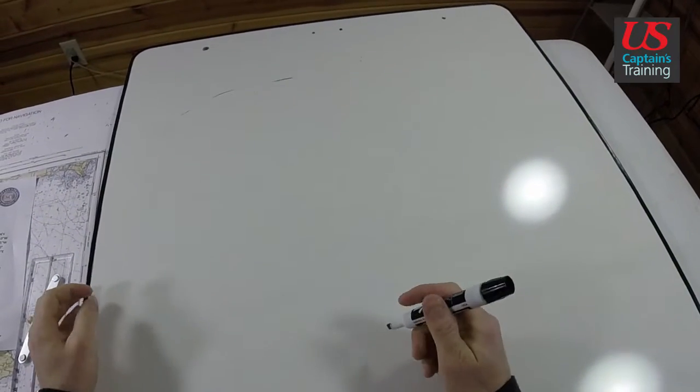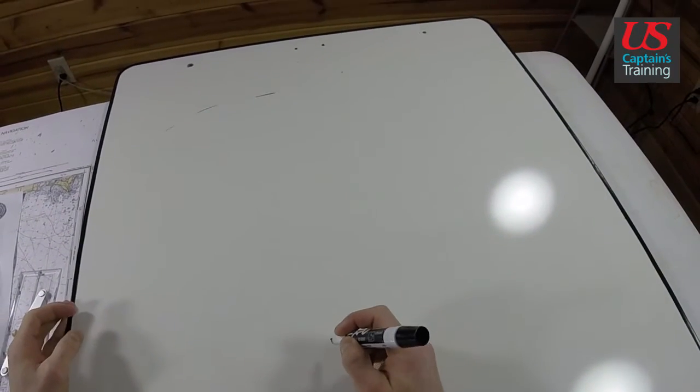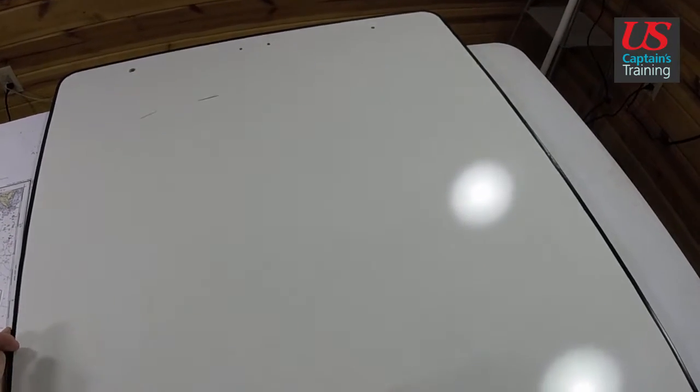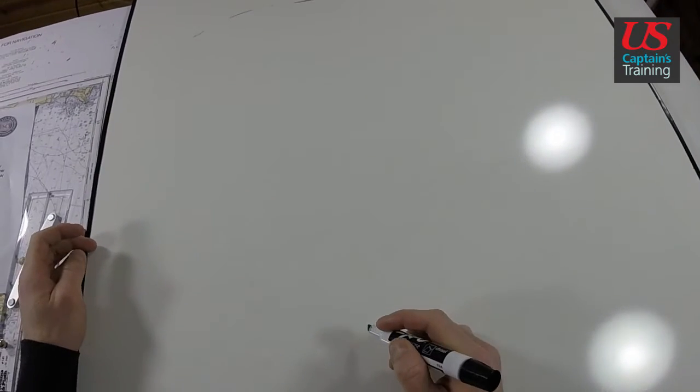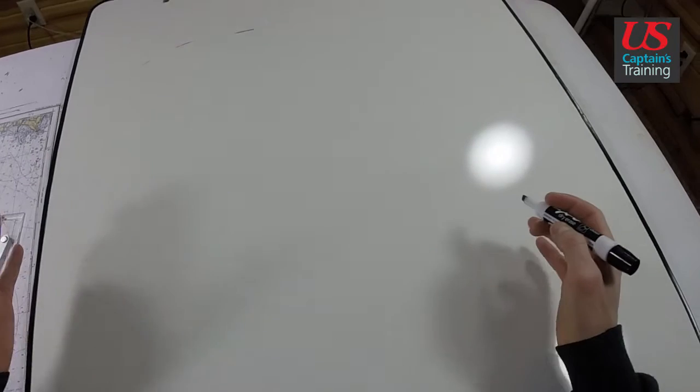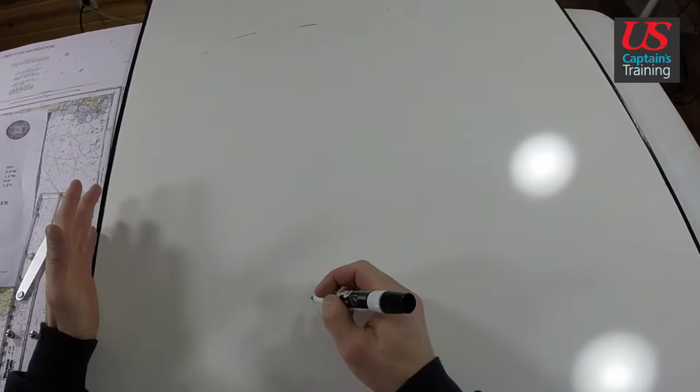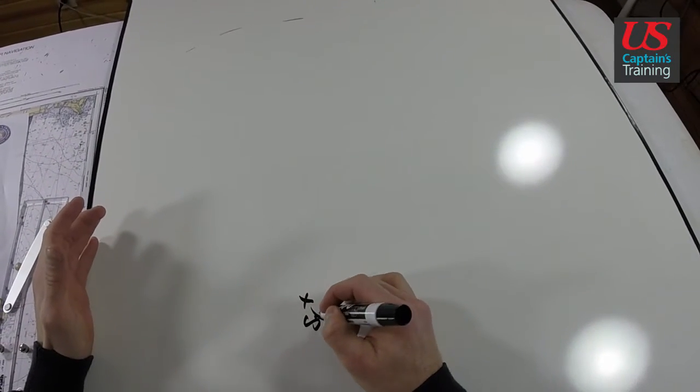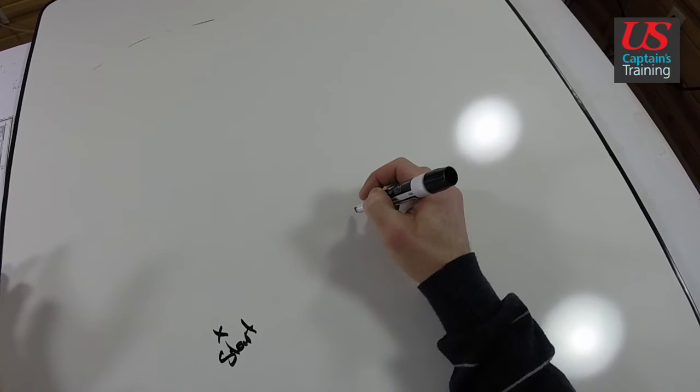Let's go over the steps involved to find compass course made good between two points on a chart. So what we do is we find the start and we find the end.